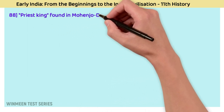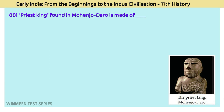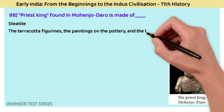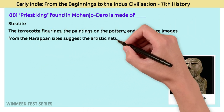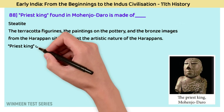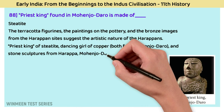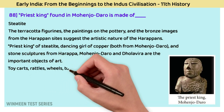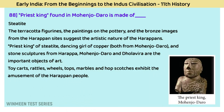Question 88: The Priest King found in Mohenjo-daro is made of? The answer is steatite. Terracotta figurines, paintings on pottery, and bronze images from Harappan sites suggest the artistic nature of Harappan people. The Priest King is made of steatite, and the dancing girl is made of copper, both from Mohenjo-daro. Stone sculptures from Harappa, Mohenjo-daro, and Dholavira are important artifacts. Toy carts, rattles, wheels, tops, marbles, and hopscotch pieces exhibit the amusements of Harappan people.